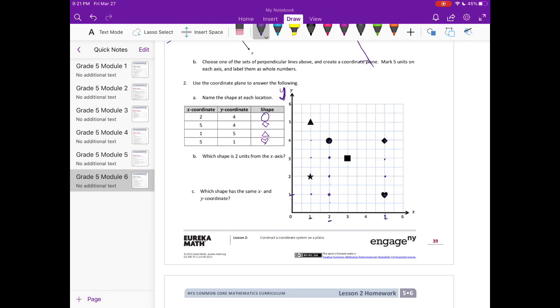What shape is two units from the x-axis? So this right here is the x-axis. Which one is two units away? Here's one unit. This is two units, so the only one on this line right here that's two units away is the star. And then what shape has the same x and y coordinates? So we're looking for something that's like one, one. There's nothing at one, one. Is there anything at two, two? There's nothing here at two, two. At three, three there is a square. So that is the one. There's nothing else at four, four or five, five or six, six, so that's the only one.